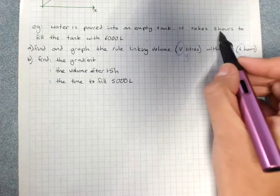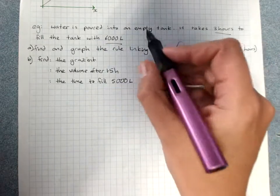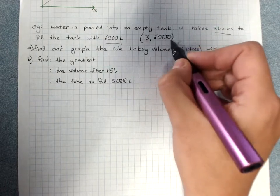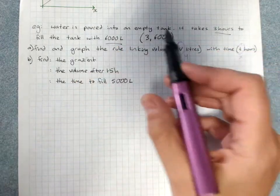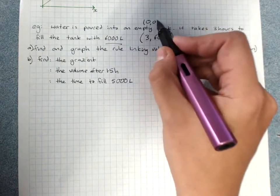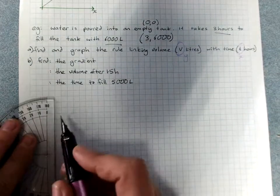Basically, use the values they give you. It takes three hours to fill the tank with 6,000 liters. That says we've got a point of 3, 6,000. And since we start at the origin, water starts with an empty tank at 0 time, we'll start at 0, 0. That gives us two points. So it's very easy to graph.